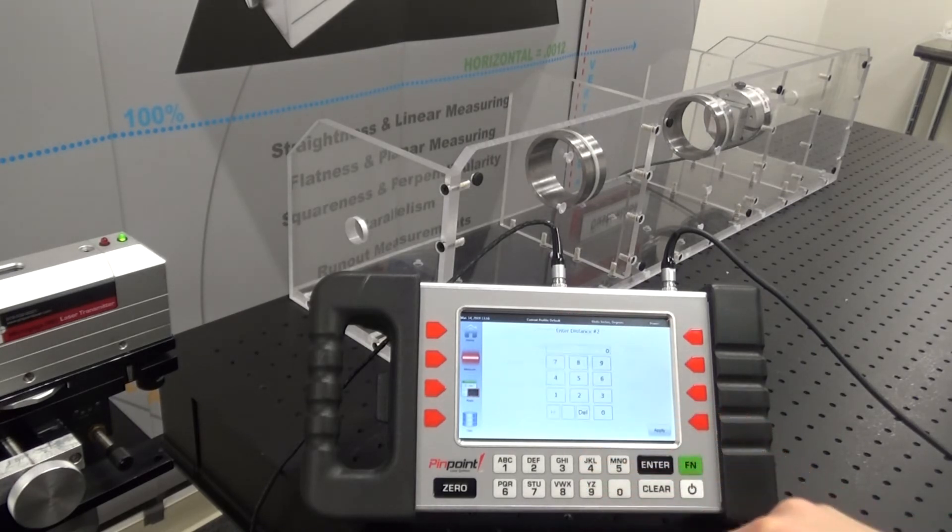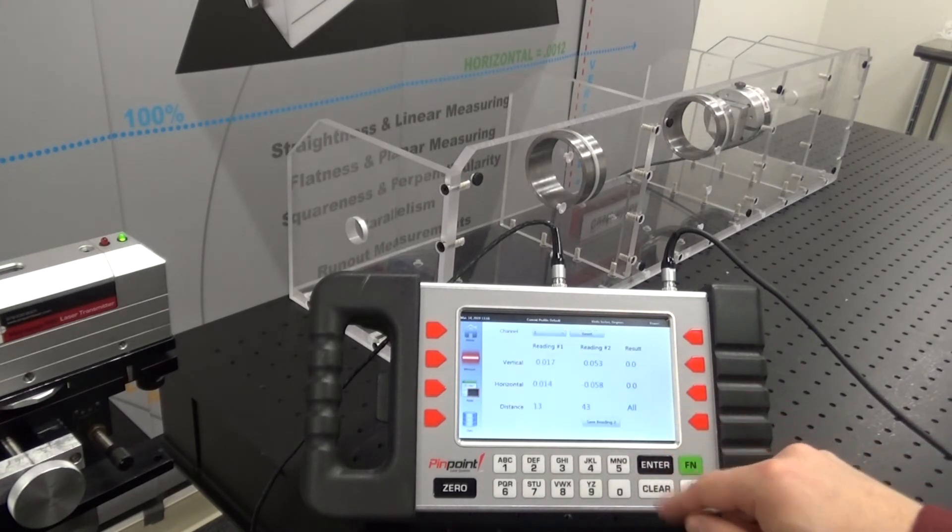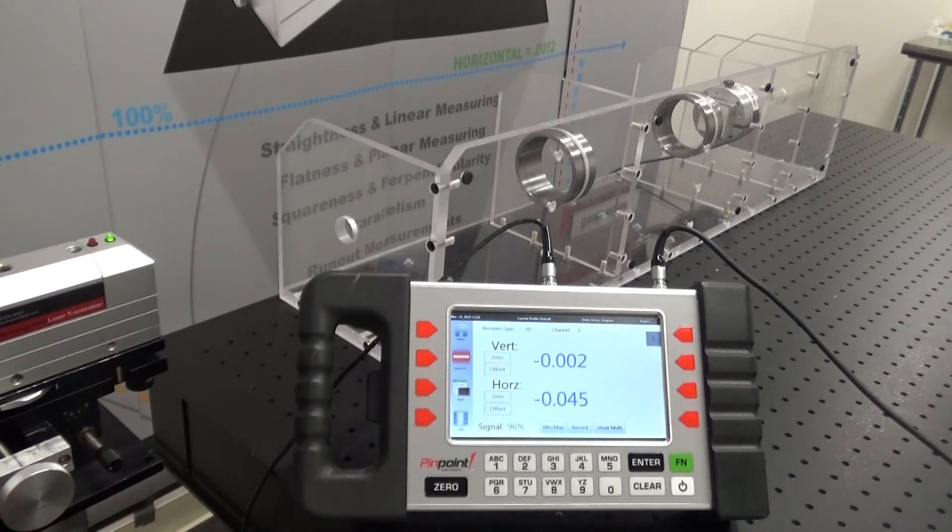the operator will be instructed on where to aim the laser using the pitch and yaw knobs of the 4-axis mount. In this example, the display calculates that the laser needs to be aimed at negative two vertical and plus 45 thou horizontal to achieve a straight line through the bores. So we adjust the pitch and yaw knobs of the 4-axis mount accordingly until the laser is aimed at these target values.